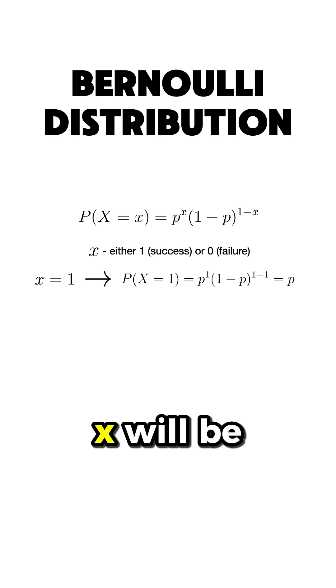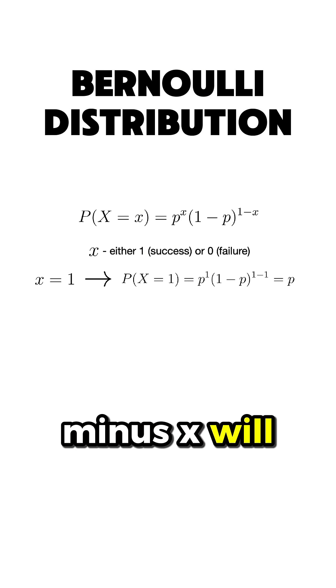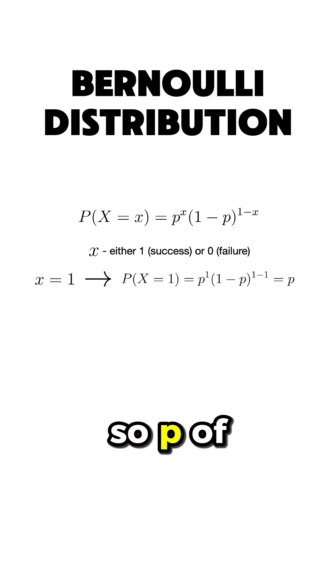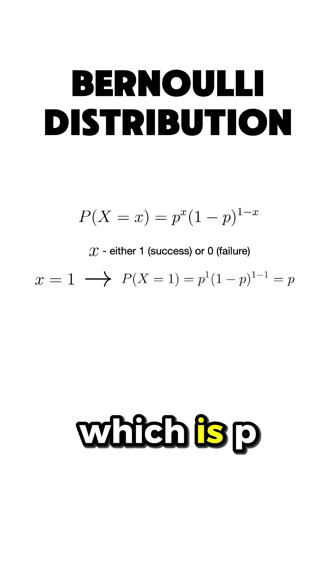then we remain only with the left side of the equation, since 1-x will be 0, and 1-p raised to the power of 1-x will be equal to 1. So P(X=1) will equal to the probability of success, which is p.